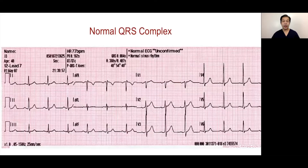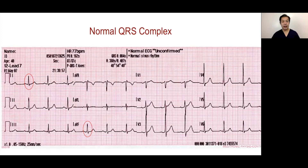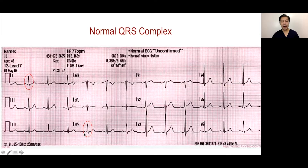The normal QRS complex is less than 0.12 seconds, because the activation of the right and left ventricles are simultaneous. The activation goes from left to right and superior to inferior, so the axis will be going downwards with positive leads 2, 3, and AVF. It should always be in normal axis — positive in lead 1, positive in AVF, and positive in lead 2.